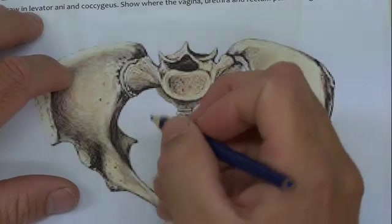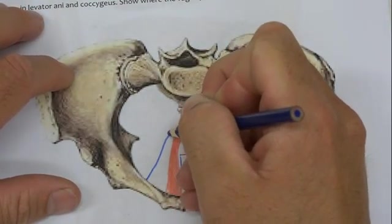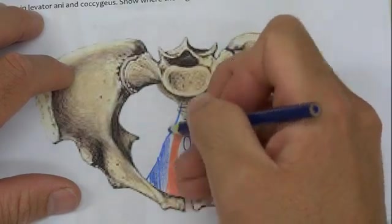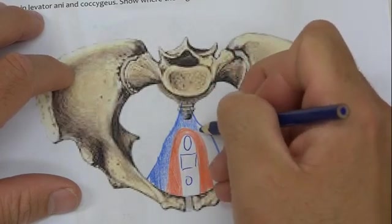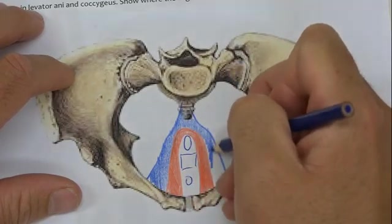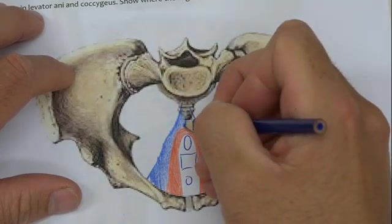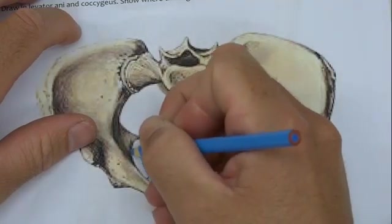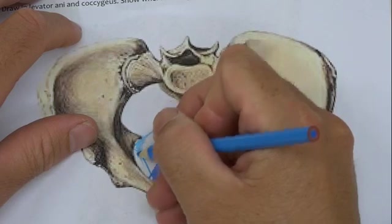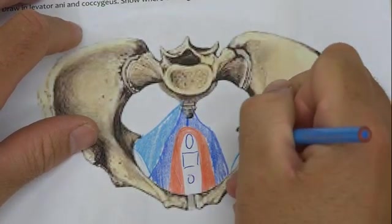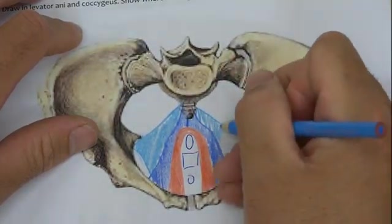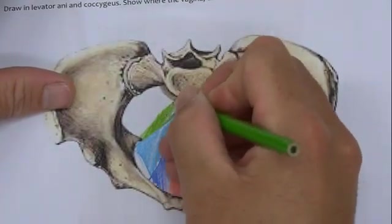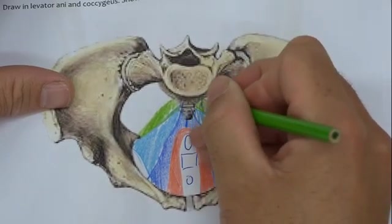Next is pubococcygeus, drawn passing out from the pubis and going up onto the coccyx and sacrum. It's important to know this is a left-sided and right-sided muscle — unlike puborectalis which is a continuous sling, pubococcygeus has a small tendinous junction in the middle separating the two sides. The next muscle, iliococcygeus, passes from a tendinous arch back towards the sacrum and coccyx. Finally, coccygeus overlaps with iliococcygeus on the posterior aspect of the pelvis.